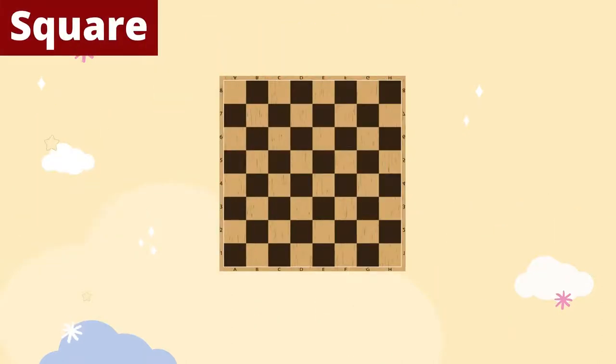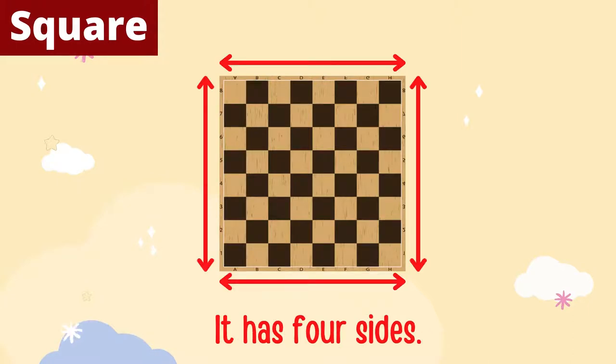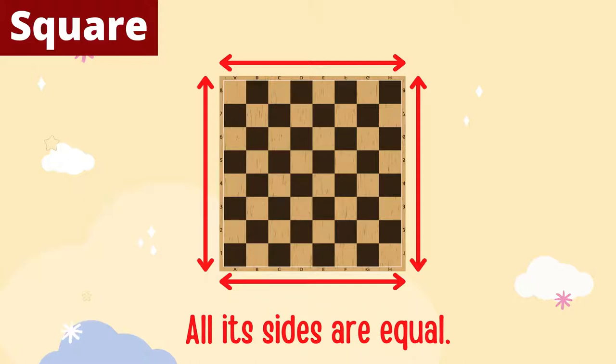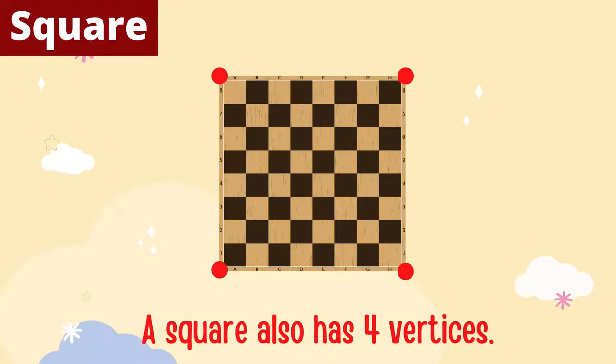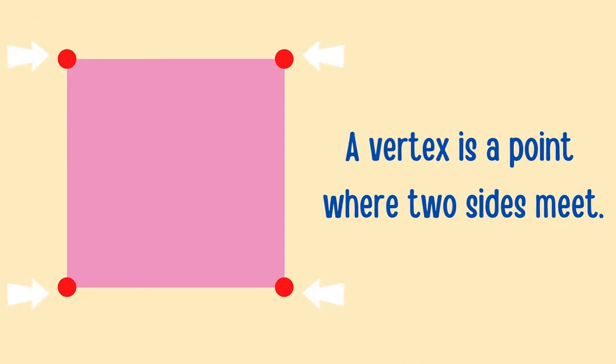Here is a chessboard. It is a square-shaped object. A square has four sides, and all its sides are equal. A square also has four vertices. Vertices is the plural of the word vertex. A vertex is a point where two sides meet.